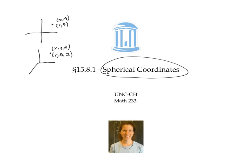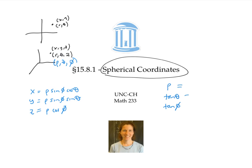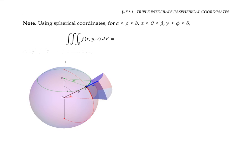In this video, we described points in terms of the spherical coordinates rho, theta, and phi. We used three equations to convert x, y, and z to spherical coordinates, and three more equations to relate rho, theta, and phi to x, y, and z. Spherical coordinates are a very good way to integrate over regions that are bounded by two spheres, and by two values of phi and by two values of theta.